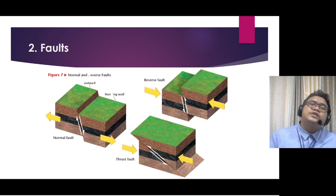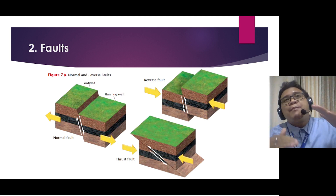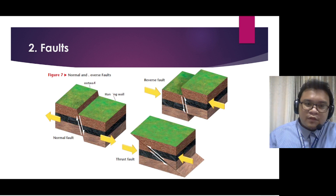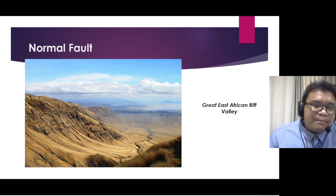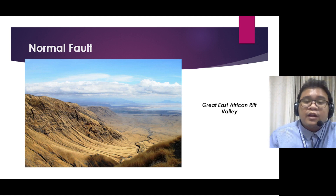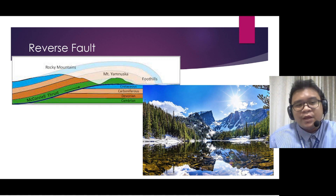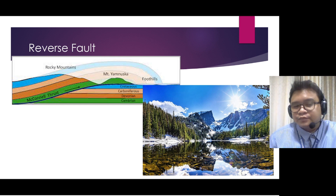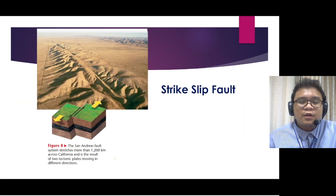Because of the low angle of the fault plane in a thrust fault, the rock of the hanging wall is pushed up and over the rock of the foot wall. A good example for normal faulting is the Great East African Rift Valley, and for reverse fault we have the Rocky Mountains. The picture on the left side shows the process of thrust faulting, and the other picture is the actual mountain itself.